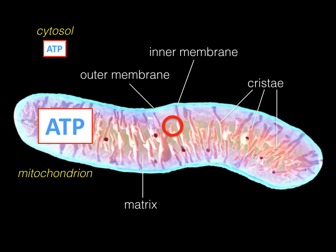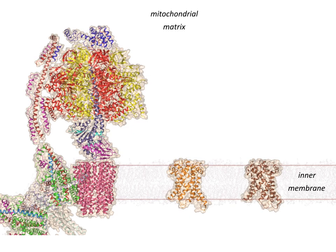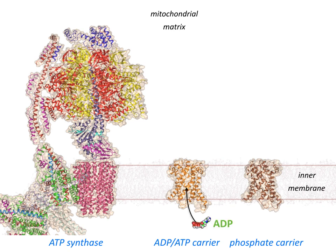The inner membrane of Cristae contains three molecular machines important for the synthesis of ATP. The first is ATP synthase, a large molecular machine that synthesizes ATP from ADP and phosphate by a rotary mechanism. You also need two transporters: one is called the mitochondrial ADP-ATP carrier, the subject of our study, and the other is called the phosphate carrier. Both of them belong to the same transporter family.